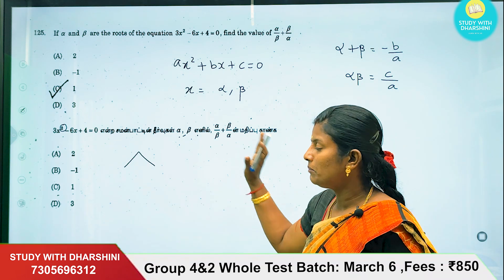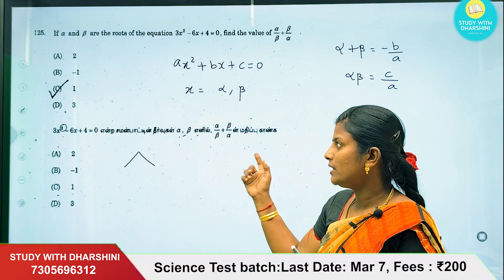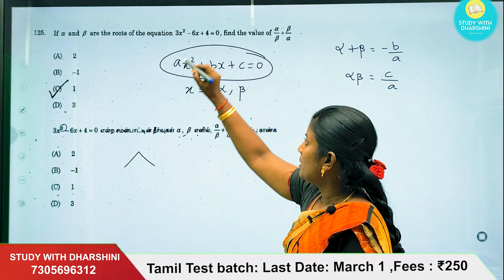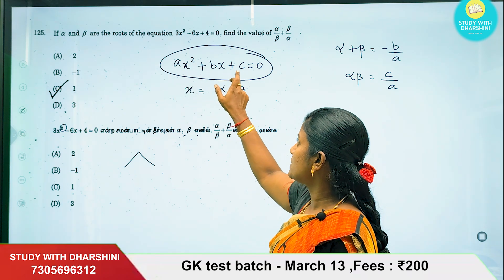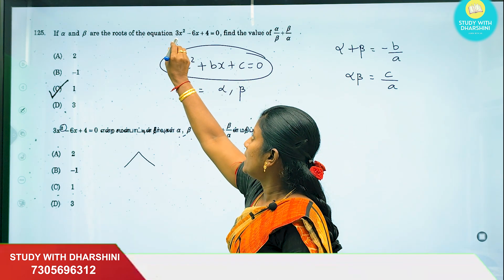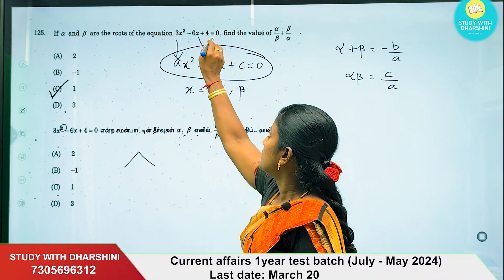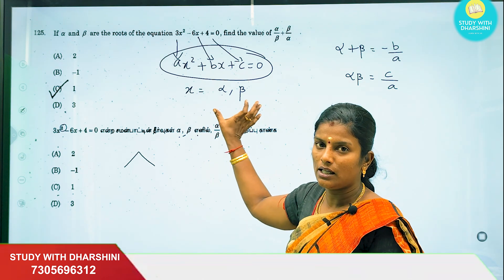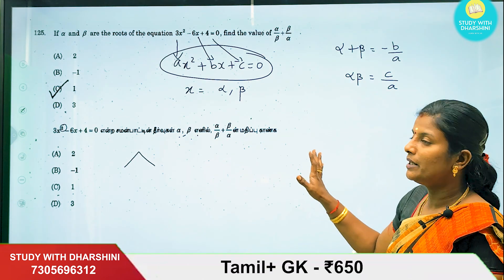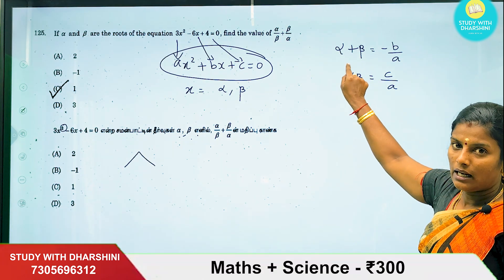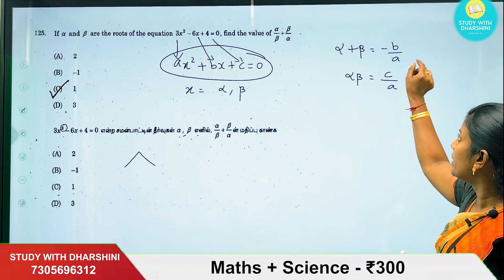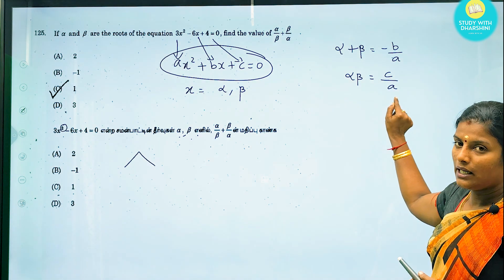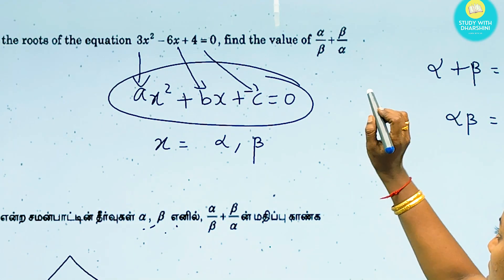Instead of solving for alpha and beta individually, if we replace them we can use a shortcut. The general form is ax squared plus bx plus c equals 0. Comparing with our equation, a is 3, b is minus 6, and c is 4. The important concepts are: alpha plus beta equals minus b by a, and alpha times beta equals c by a.